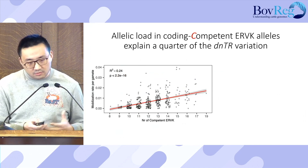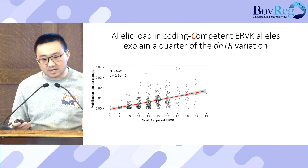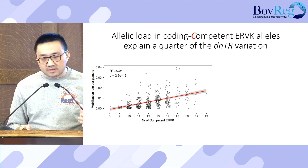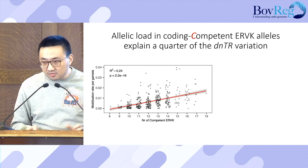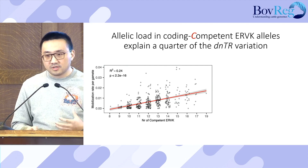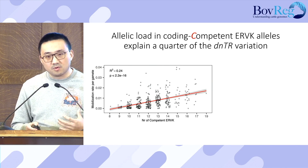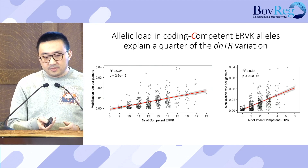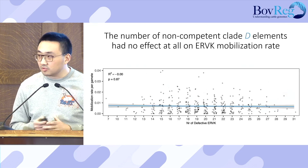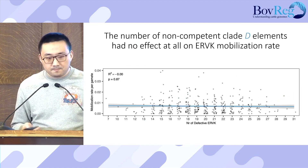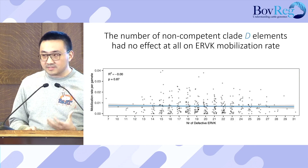We categorized the relationship between mobilization rate and the number of coding-competent ERVK alleles carried, grouping the 400 animals accordingly. Each cattle carries between 8 and 17 coding-competent alleles. The number of coding-competent ERVK alleles they carry is positively correlated with the transposition rate, and the number of coding-competent ERVK alleles explains more than a quarter of the variation. This effect is even stronger when analyzed using only intact ERVK alleles, and is not observed for defective ERVs. We conclude that it is the number of coding-competent ERVK alleles driving the mobilization rate.